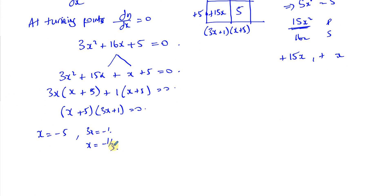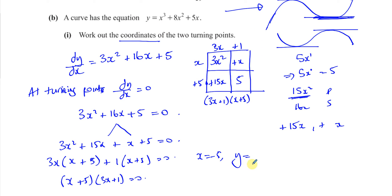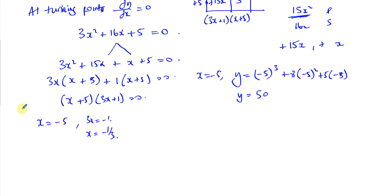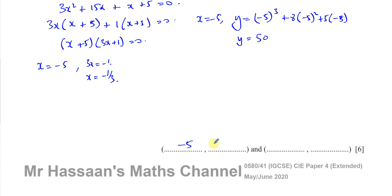They want the coordinates of the two turning points, so we need the y values. When x = −5, y = (−5)³ + 8(−5)² + 5(−5), which equals −125 + 200 − 25 = 50. So that gives us the coordinates (−5, 50).